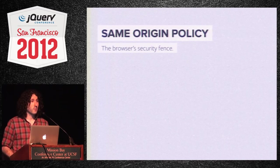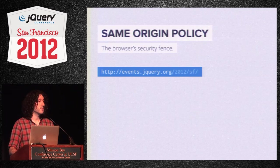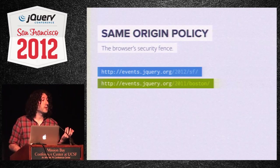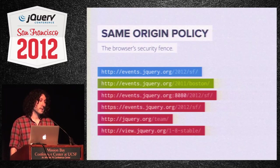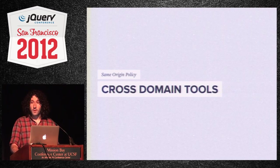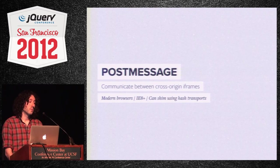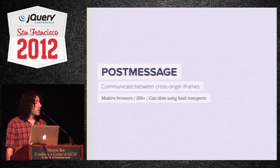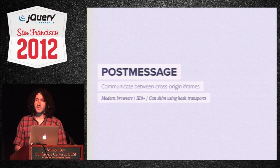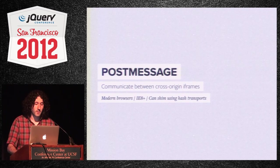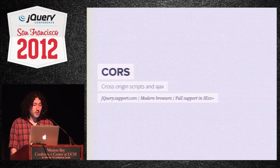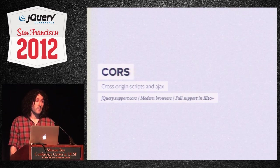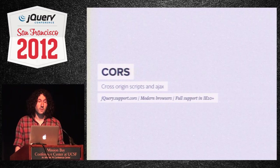Luckily, the browser provides cross-domain tools to circumvent this. The first is PostMessage, which allows communication between cross-origin iframes. It works in modern browsers and IE8 and above. The other is CORS — cross-origin resource sharing — which allows cross-origin scripts and AJAX requests. You can test for it using jQuery.support.cors. It's supported in modern browsers and IE10 and above, so you lose IE8/9 in cross-domain situations. Almost all WordPress installs run on the same domain, but enough don't that we need to handle it.